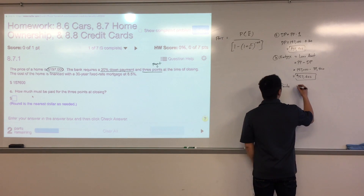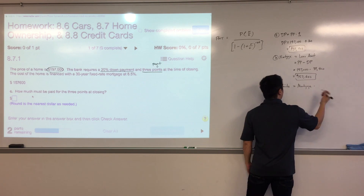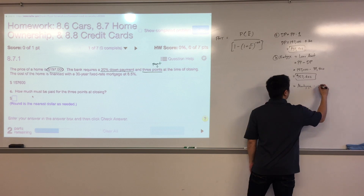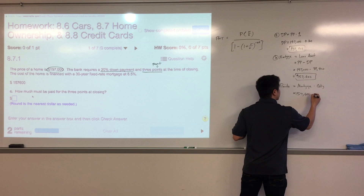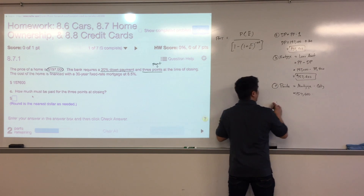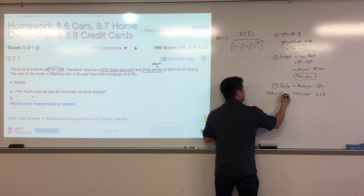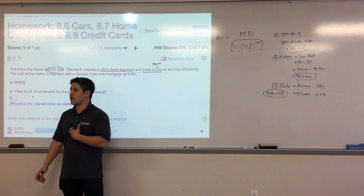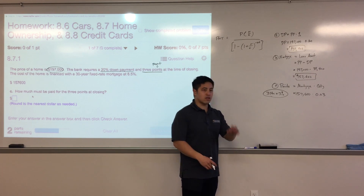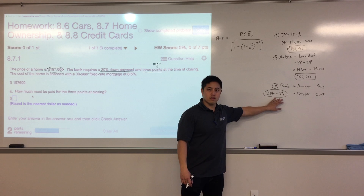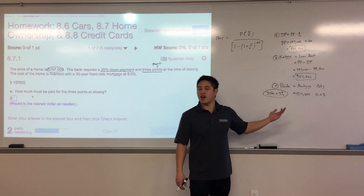Your points are your mortgage amount times your percentage of points. In this case, it's $157,600 times 0.03, because three points equals 3% — that's the key to remember. If they say two points, they're charging you 2%. This is negotiable in a real purchase; you can potentially even get zero points, though they'll make money another way.